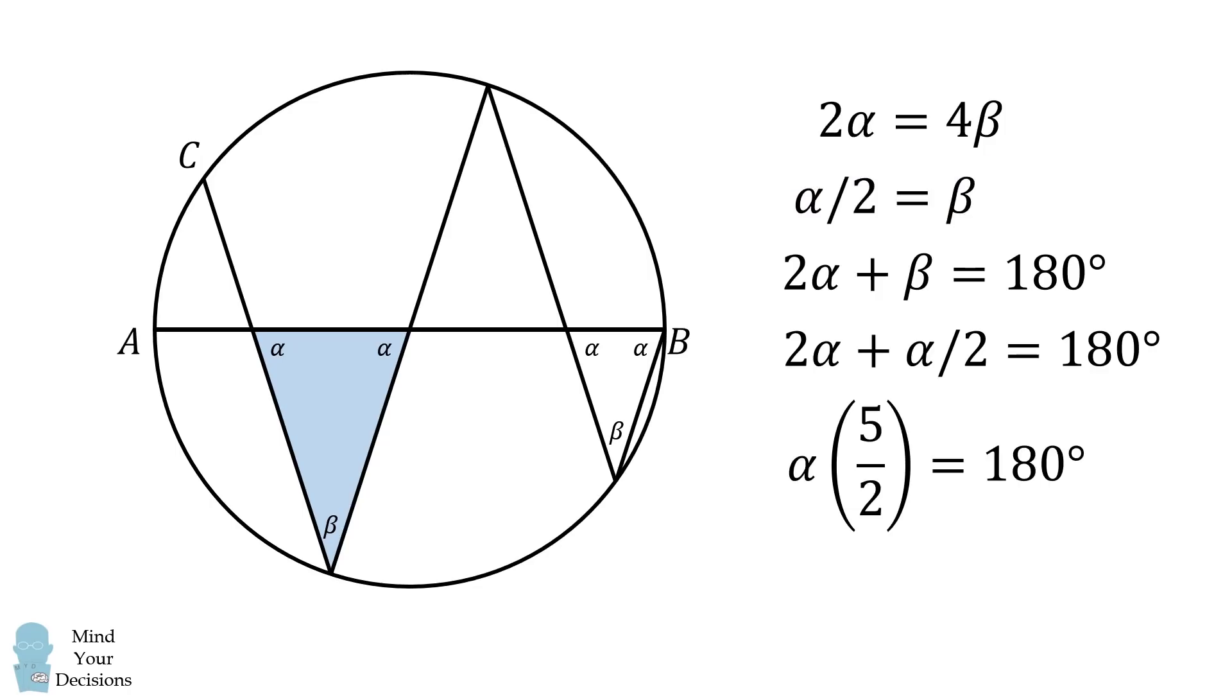We get alpha multiplied by 5 over 2 is equal to 180. We'll multiply both sides of the equation by 2 over 5, and thus we have alpha is equal to 72 degrees. And that's our answer.